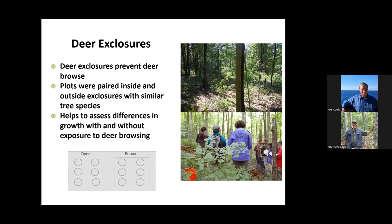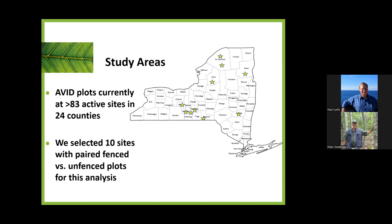At several sites around New York, we establish deer exclosures to prevent deer browsing. They provide a good comparison of what would happen in the absence of deer browsing — what type of plant growth can we expect if we take deer out of the picture. We currently have AVID plots in more than 24 counties across New York and more than 83 active sites. We have 10 sites where we've got paired fenced and unfenced plots, and those are the ones we use for the analysis I'm going to share.